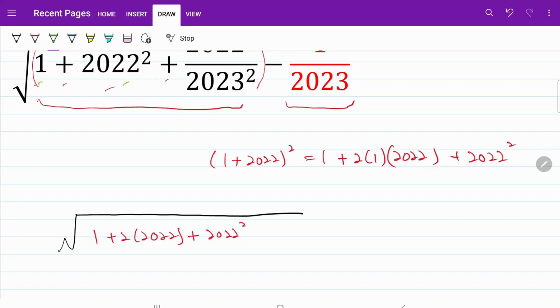And from here, I notice that this part and this part is originally found in the expression. And this is the new thing that we have introduced. So what I'm going to do is make a minus 2 times 2022 just to balance things out.